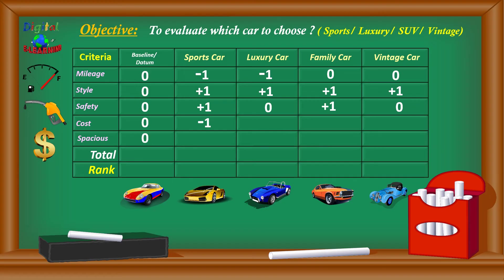For cost, the sports car is very costly compared to the baseline, scoring minus one; the luxury car similarly scores minus one; and the family car, being an upgraded version, is also a little more costly. For spaciousness, the sports car is not as spacious as the baseline; the luxury car is the same as the baseline; the family car is more spacious; and the vintage car is the same as the baseline. Now that we have assigned all the scores, we calculate the totals.